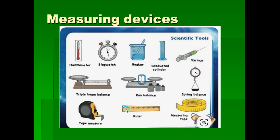These are the different measuring devices we have: a thermometer, a beaker, a scale, a tape rule, and a ruler — the measuring tape you can see at a construction site. There is also a pan balance used by bakers and chefs, a ruler you are already familiar with, a syringe from the hospital, and a cylinder for measuring liquid.